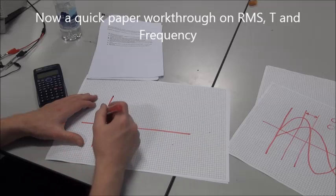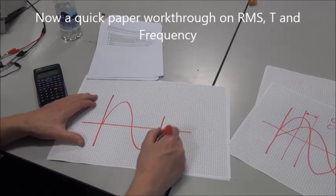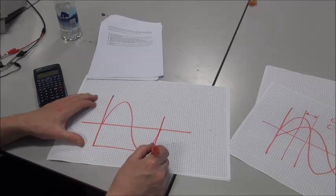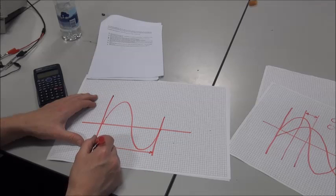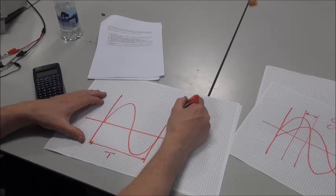To work out frequency, we take the periodic time, T, and divide that into 1.